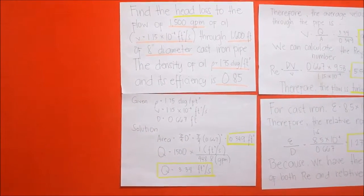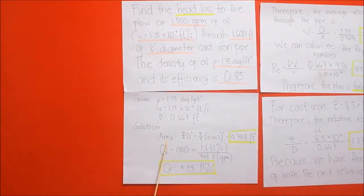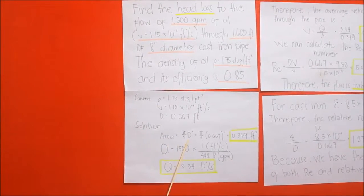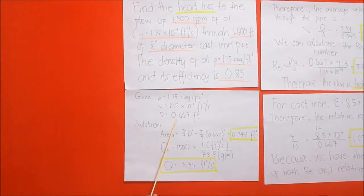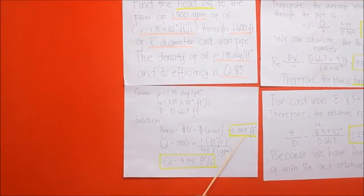First, to find the discharge of the oil or the liquid, we'll need to find the area where pi over 4 times diameter squared, where diameter equals 0.667, then we'll arrive to the answer of 0.349 square feet.